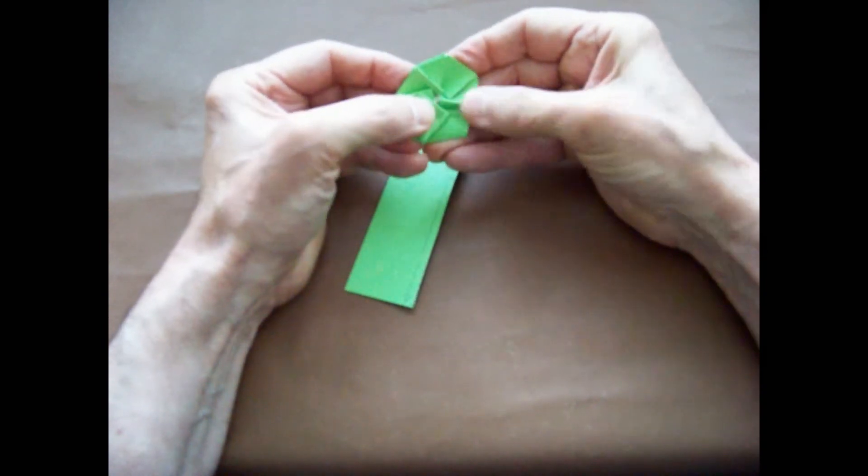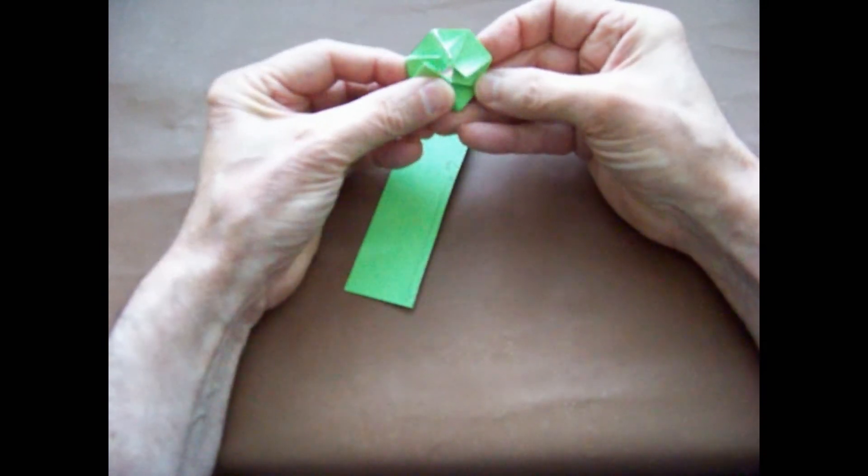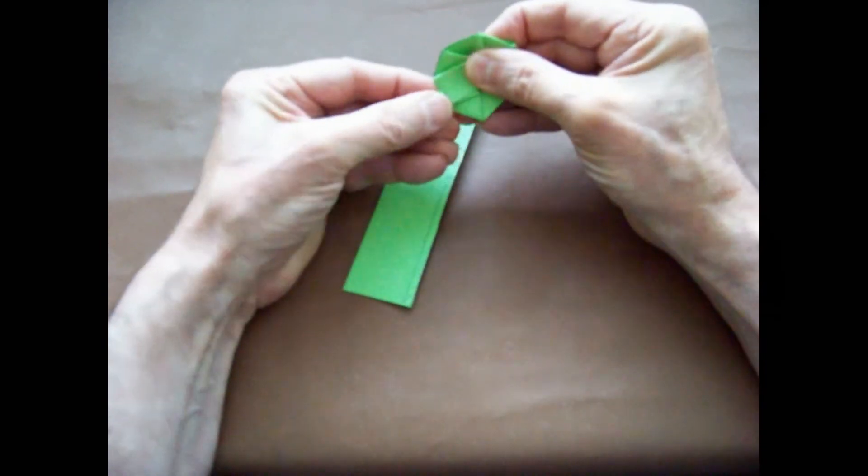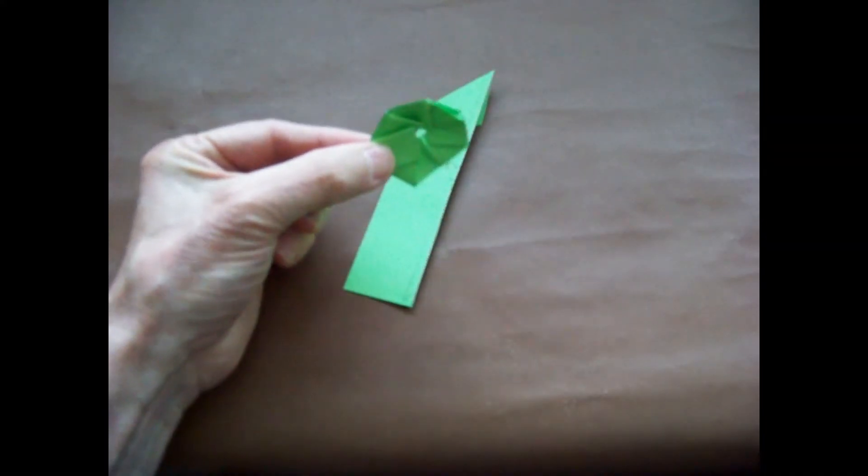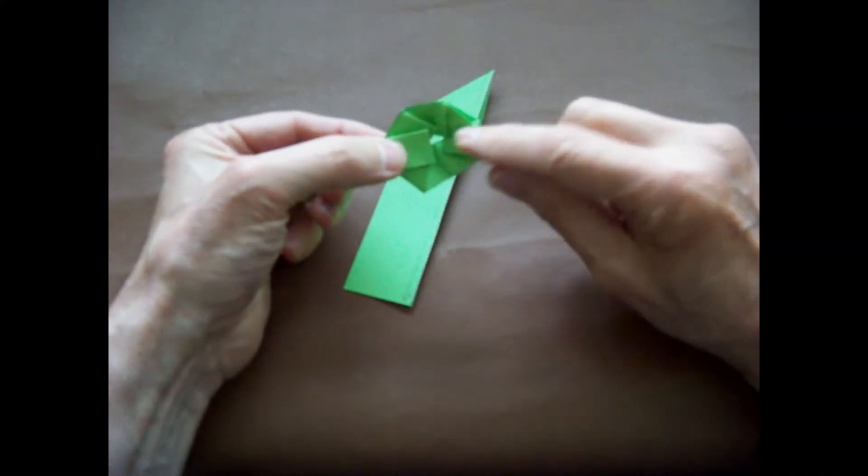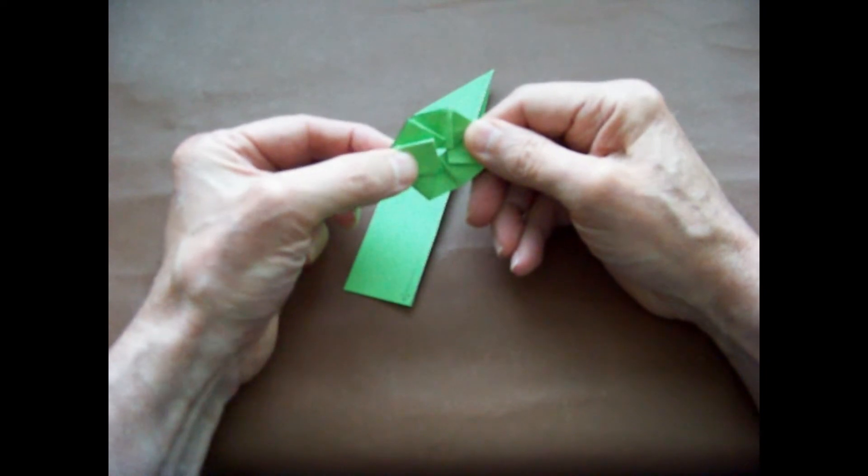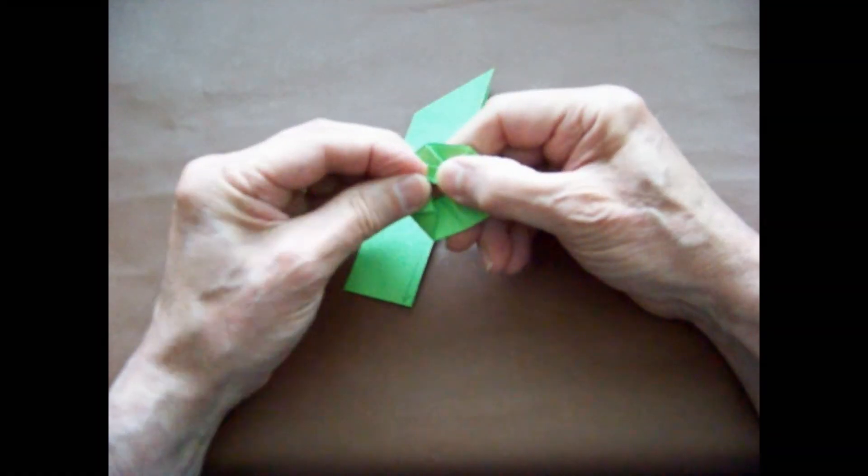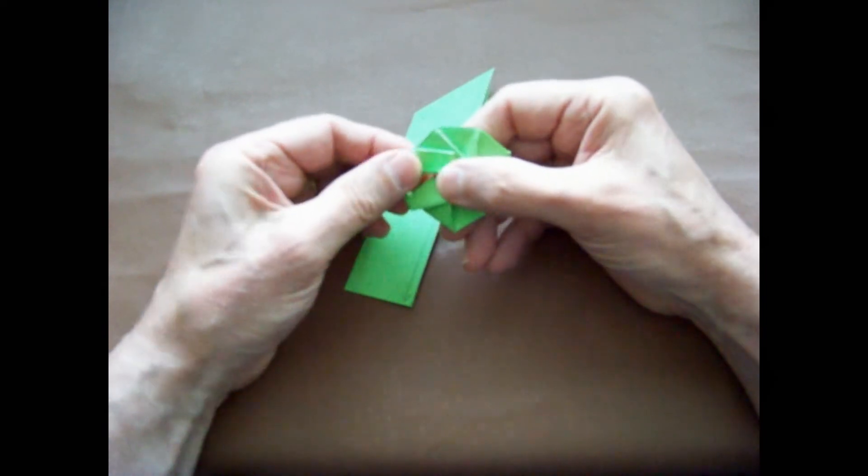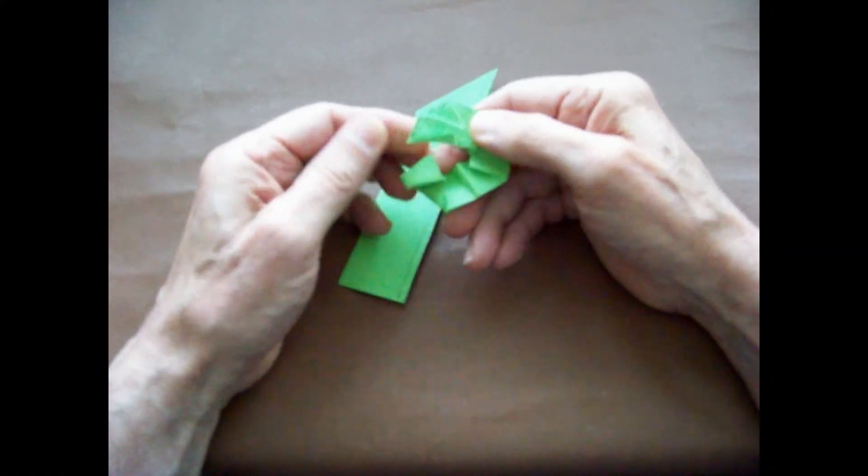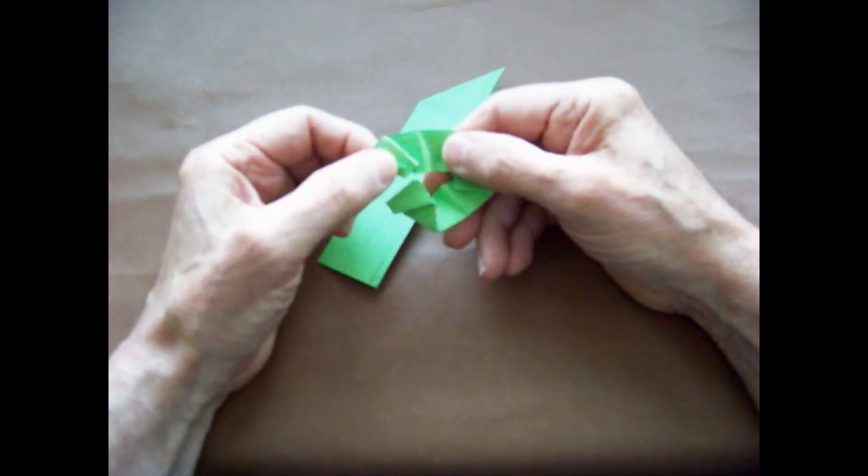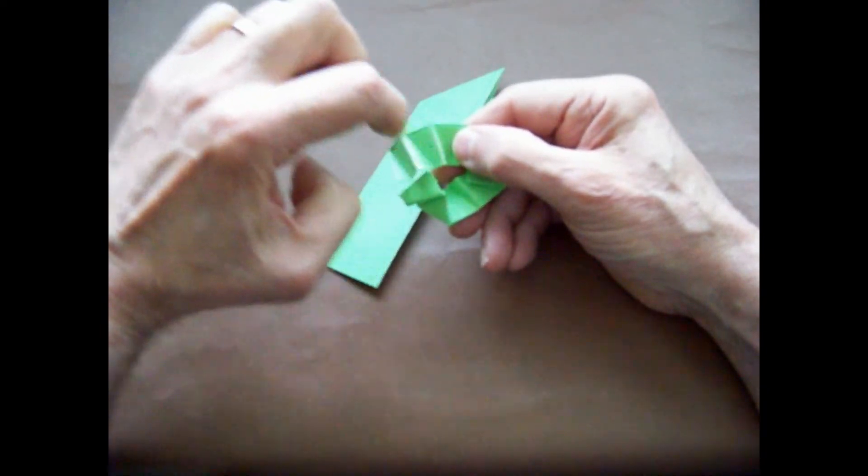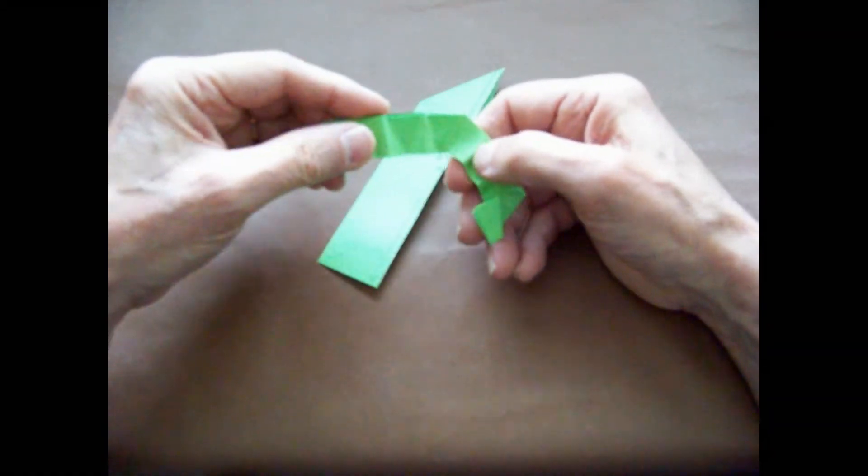When you've created all the pivot folds, you should have an octagon with a very small circle in the center. You want to make one more little fold on the end that matches the folds along the other sides.